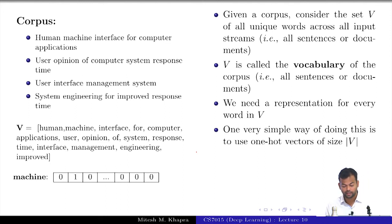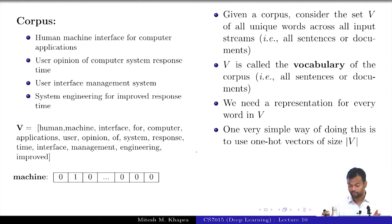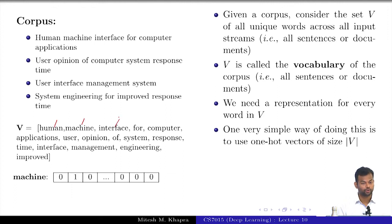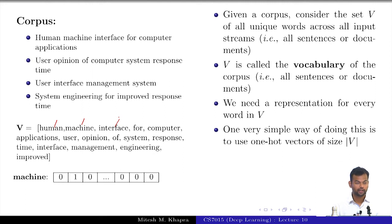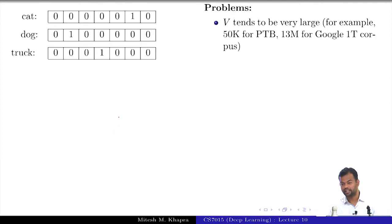One simple approach: you want a vector, so here is one-hot representation. If the total number of words in the vocabulary is |V|, construct a vector of size |V|. Assign a number to every word — human = 0, machine = 1, interface = 2, and so on. For a given word, take the vector of size |V|, switch on the corresponding bit, and set everything else to zero — hence 'one-hot.' At any point only one element in the vector is on. That is the simple one-hot representation.